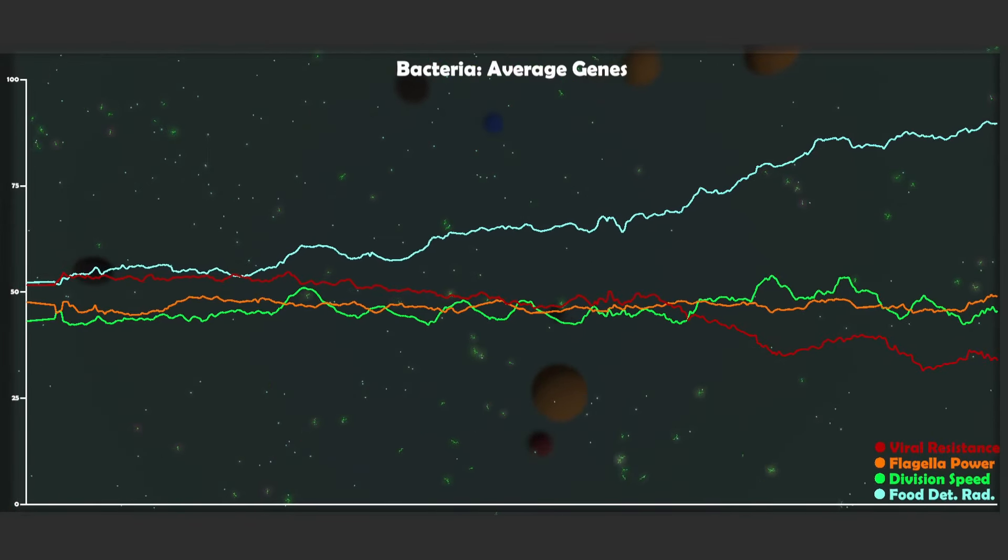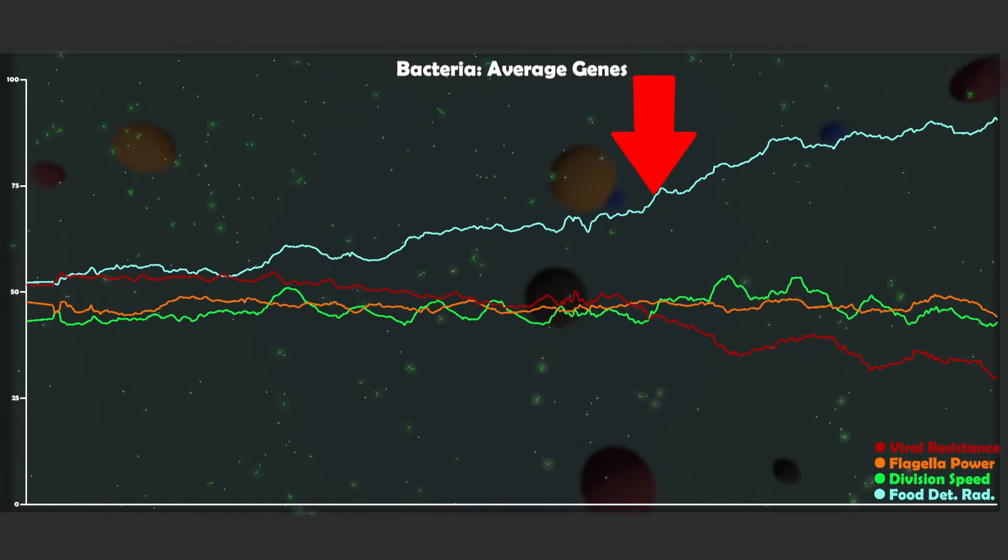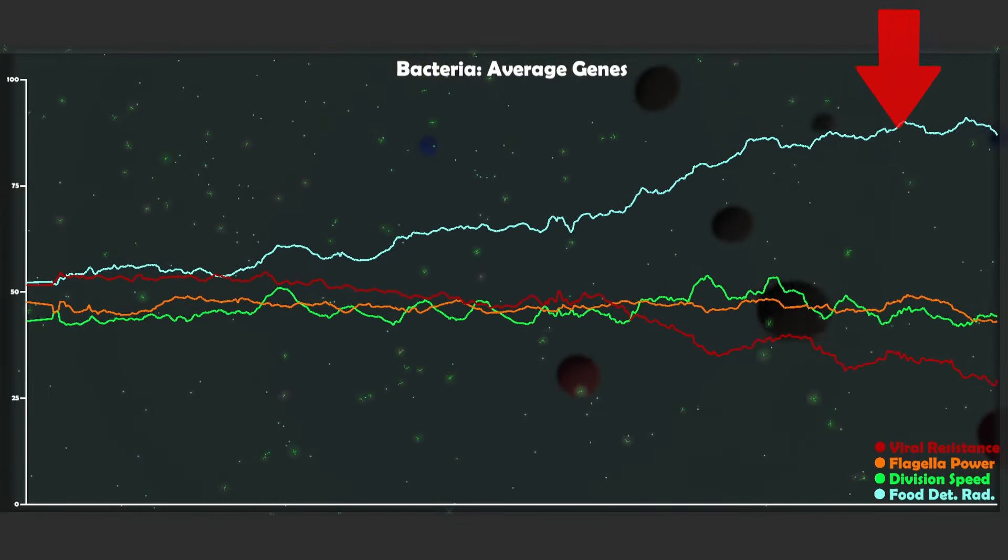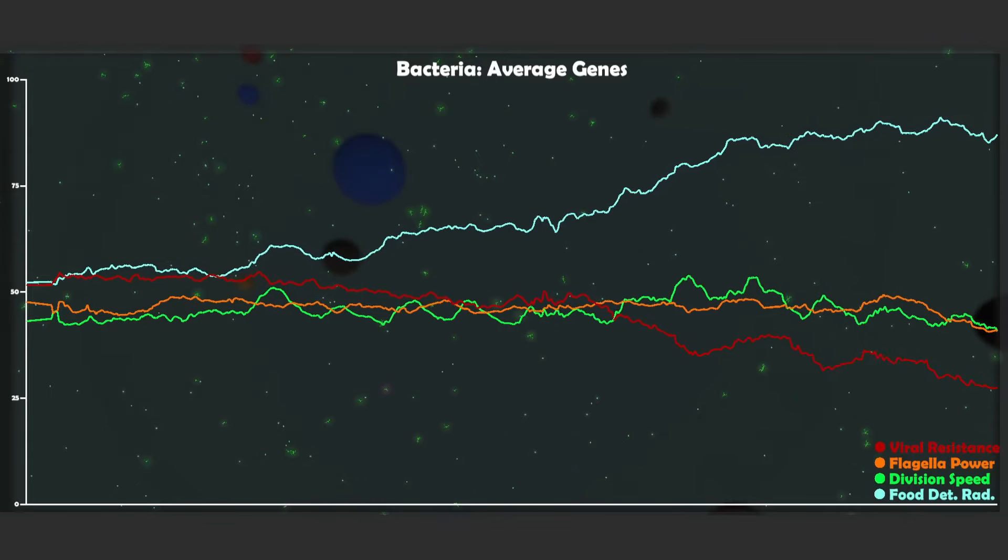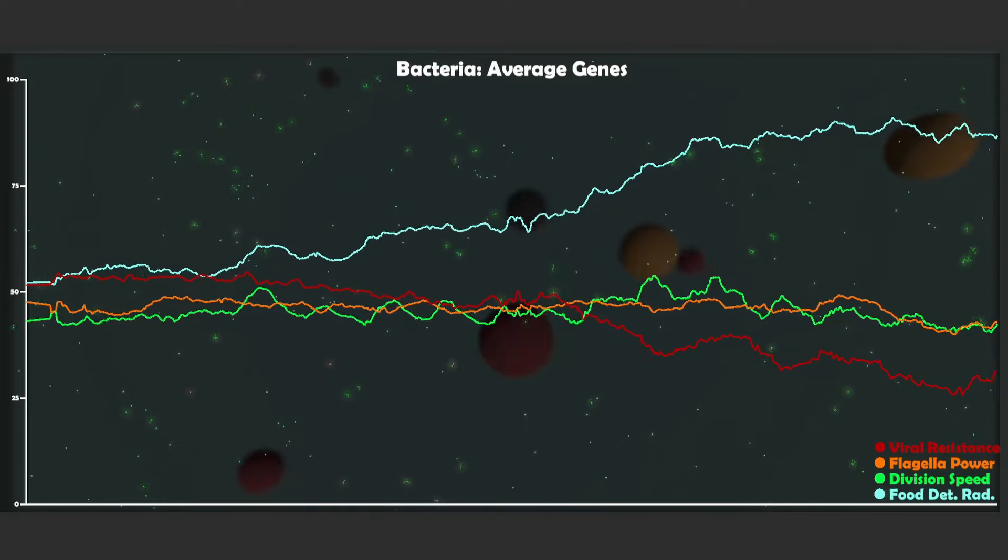And here towards the end, we can also take a look at their genomes. Here the food detection radius gene, as you can see, is constantly increasing because as there's less food around, the average distance to the food increases. So the bacteria that can sense this far away food is more successful in multiplying.